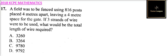Question number 16. We are told a field was to be fenced using 816 posts, placed 4 meters apart, leaving a 4 meter space for the gate. If three strands of wire were to be used, what would be the total length of wire required?